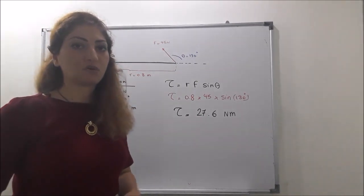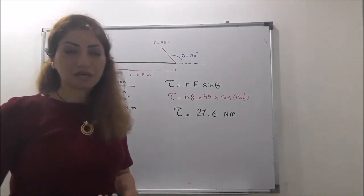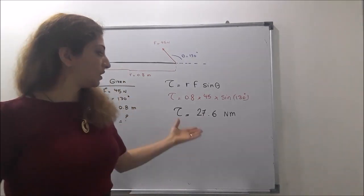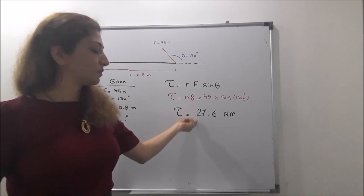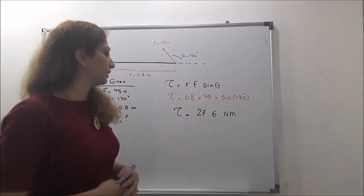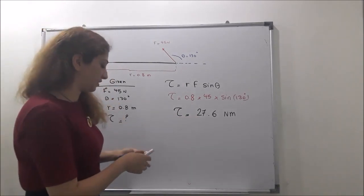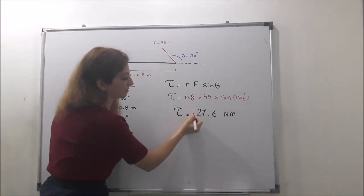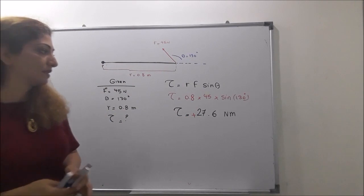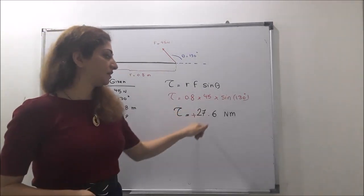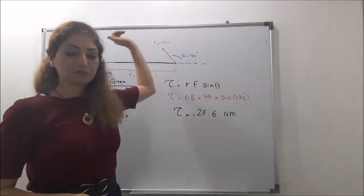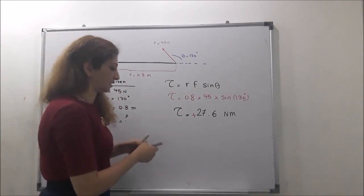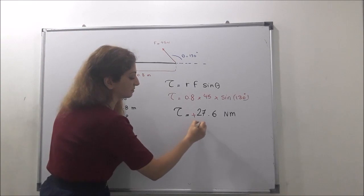So the value of the torque is 27.6 Newton meters. If you want to find the direction, you want to find the direction of the rotation. As I said, I showed you by positive and minus sign. So we have to find if it is positive or negative. The rotation here is positive because it is anti-clockwise. Everything is positive and the rotation is also in the positive direction, which means positive means anti-clockwise.